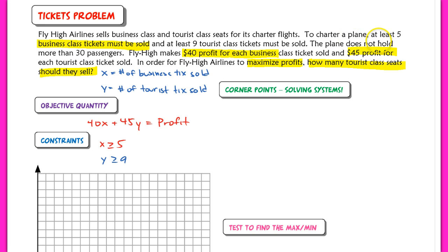And then the last sentence here says the plane does not hold more than 30 passengers, which means that total X plus Y must be less than or equal to 30. All right. So these are the constraints now that I need to graph.